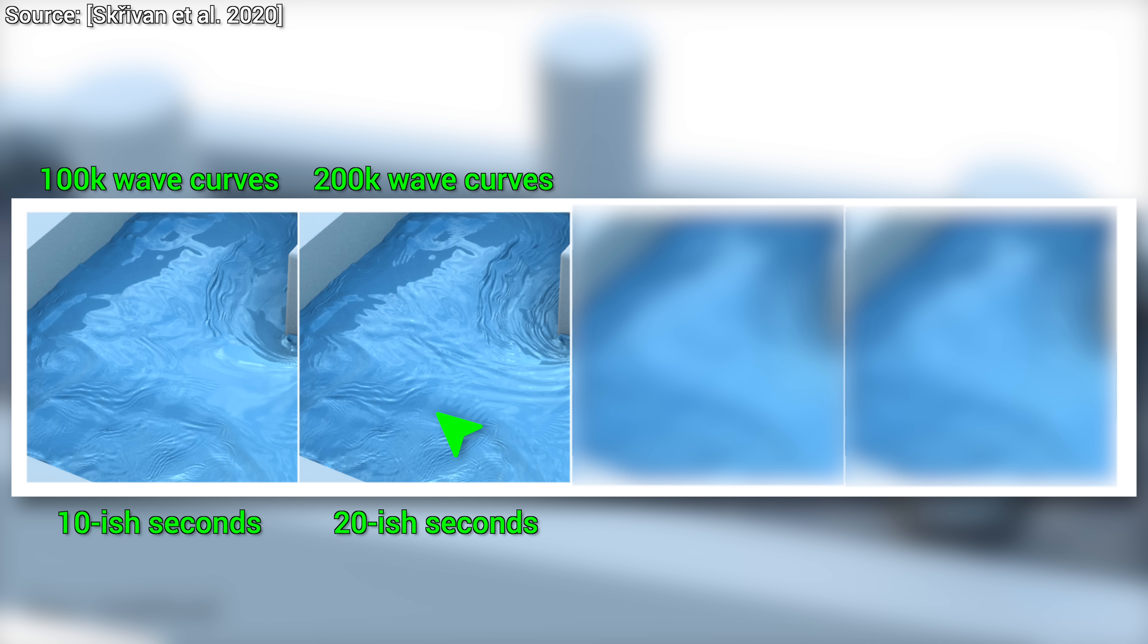This already greatly enhanced the quality of the results, but we can decide to add more. So, first case, 100k wave curves in 10-ish seconds. Now comes the linear part. If we decide that we are yearning for a little more, we can run 200k wave curves, and the execution time will be 20-ish seconds. It looks like this.